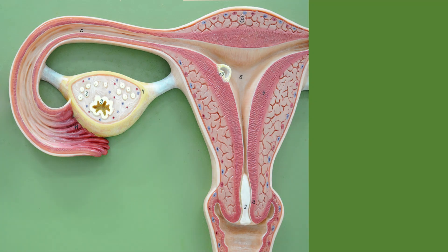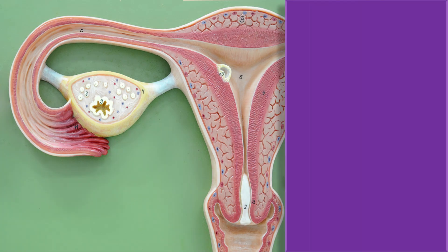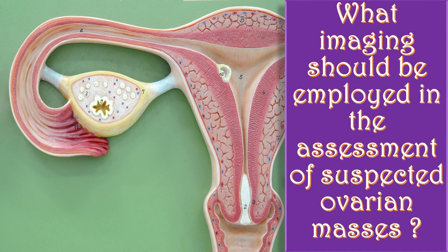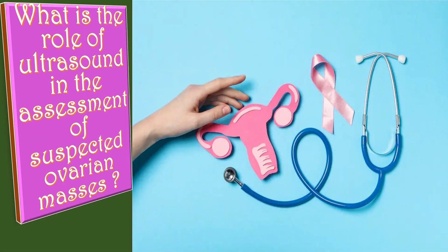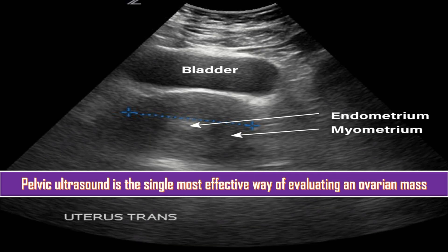Regarding imaging in the assessment of a suspected ovarian mass: a pelvic ultrasound is the single most effective way of evaluating an ovarian mass, with transvaginal ultrasonography being preferable due to its increased sensitivity over transabdominal ultrasound.